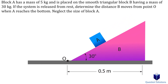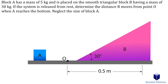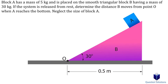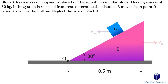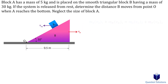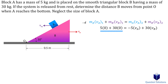In this problem, we need to find the distance block B moves when block A slides down the ramp. When block A slides down, the horizontal component of its velocity will push block B to the right, so block B has a horizontal velocity to the right and block A has a horizontal velocity to the left. We write an equation for conservation of momentum, picking right as positive. Since the system starts from rest, the initial momentums for both are zero.